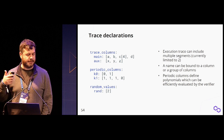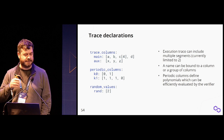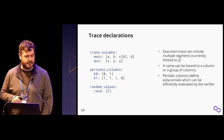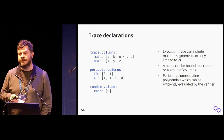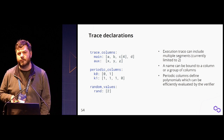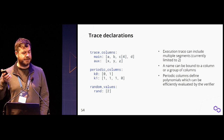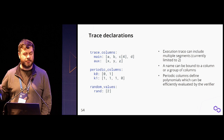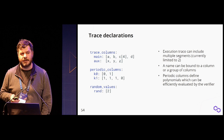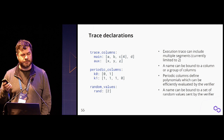Periodic columns are almost free for the verifier to evaluate. You specify values that repeat in cycles and can use them for selector columns, round constants in hash functions like Rescue, and similar things. You can also specify how many random values you receive after committing to the main trace—for example, two random values that can be used to build the auxiliary trace—and you can bind them to names.